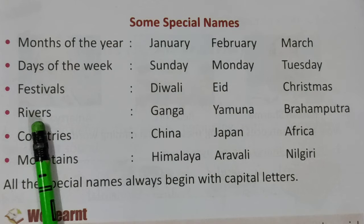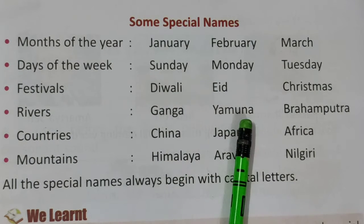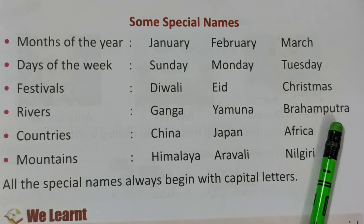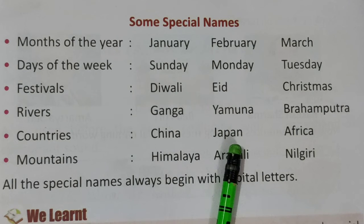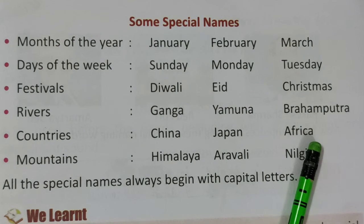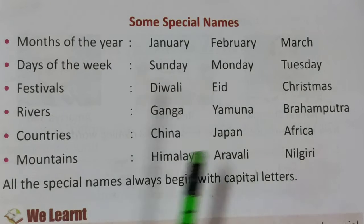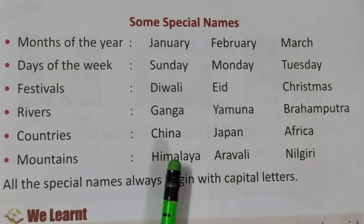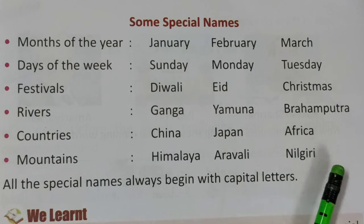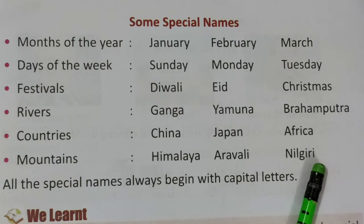Rivers — nadiyan — Ganga, Yamuna, Brahmaputra. In nadiyon ko bhi aap inke naamon se jante hain, toh in rivers ke special names hain. Countries — China, Japan, Africa. In sabhi countries ke names hain, countries ko bhi hum unke naamon se pehchante hain. Jaise hamare country ka kya naam hai? India. Toh jo India hai, hamare country ka special name hai. Mountains — Himalaya, Aravali, Neelgiri — sare mountains ke bhi names hote hain. Special names.